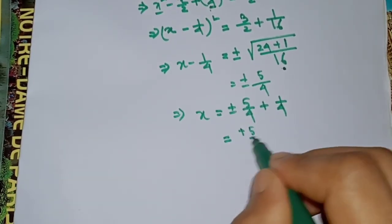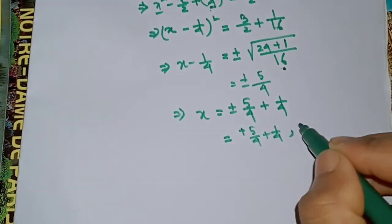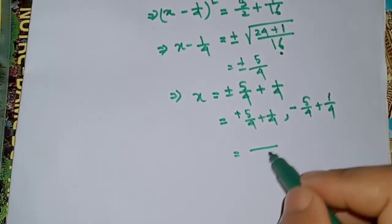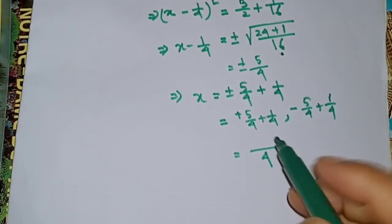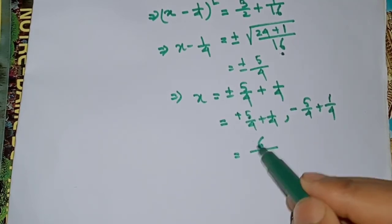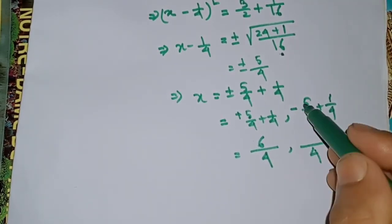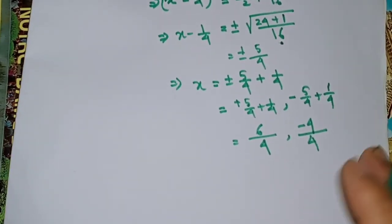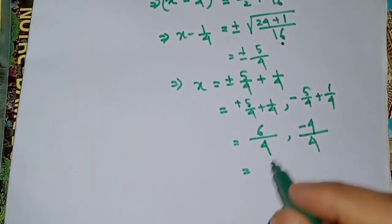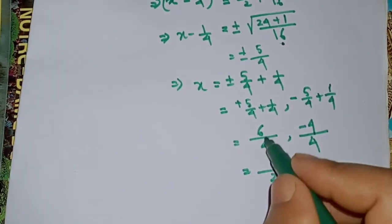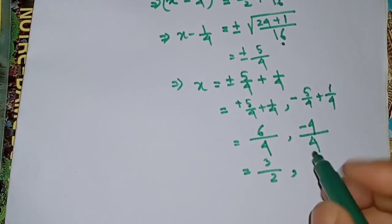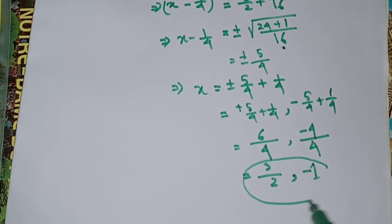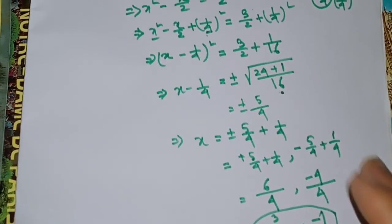Plus one by four, five minus five by four plus one by four. Five plus one equals six; the second answer: minus five plus one equals minus four. So x equals 3 by 2, and the other root is x equals minus 1.